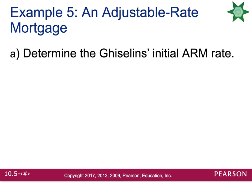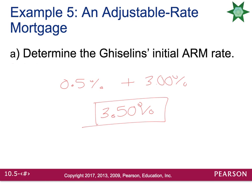Part A: Determine the initial ARM rate. The ARM rate is the sum of the one-year Treasury bill rate and the add-on rate. The Treasury bill rate was 0.5% and the bank has an add-on rate of 3%. Adding those together gives an initial ARM rate of 3.5%. That's actually really low — interest rates are going right now around 4.5% if you have very good credit, so that's why people would be attracted to this loan, since it's quite a bit lower than what you would get on a conventional loan.